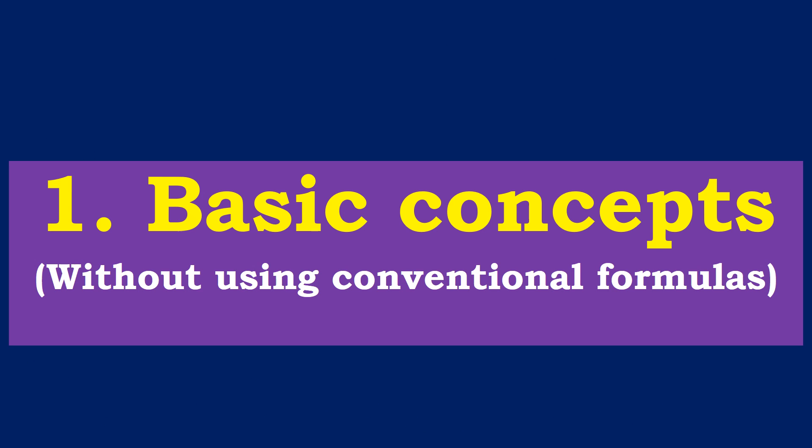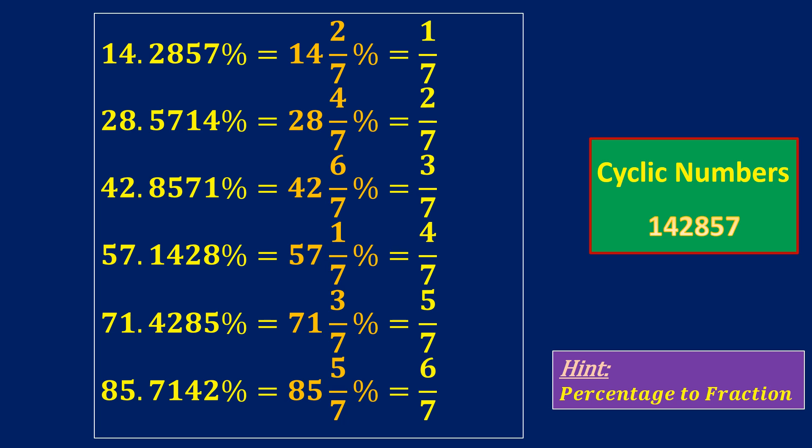Model 1 basic concept. Percentage to fraction conversion. 14.2857% or 14.2 by 7% is 1 divided by 7. When we multiply both sides by 2, we get 28.5714% or 28.4 by 7%, which is 2 by 7 and the sequence follows. It is important to understand that when we multiply this cyclic number 14.2857 with 2, 3, 4 and so on, we get the same digits in all the answers. However, the digits are just displaced.